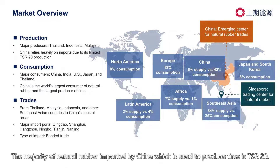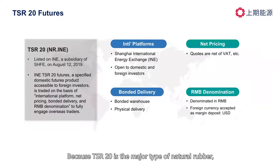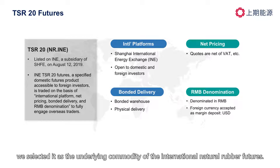The majority of natural rubber imported by China, which is used to produce tires, is TSR20. Because TSR20 is a major type of natural rubber, we select it as the underlying commodity of the international natural rubber futures.